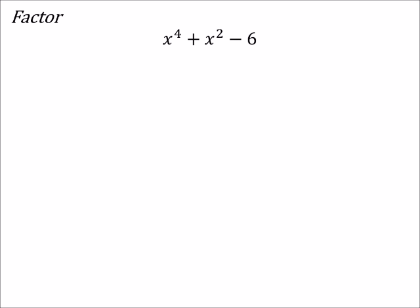Which is not x squared, and we like that middle term to be x, because we like it in the form ax squared plus bx plus c.